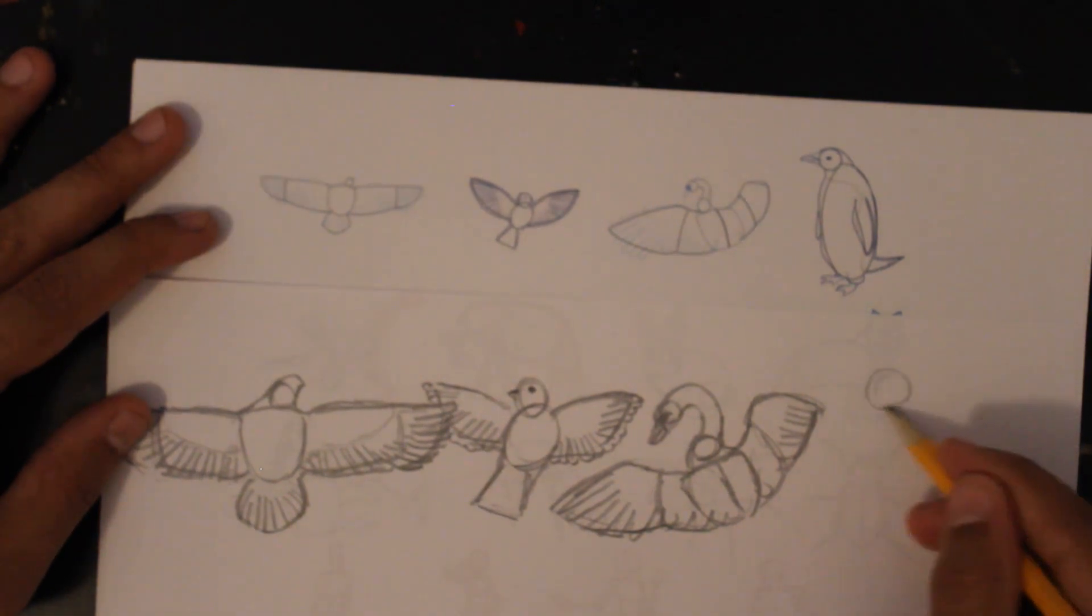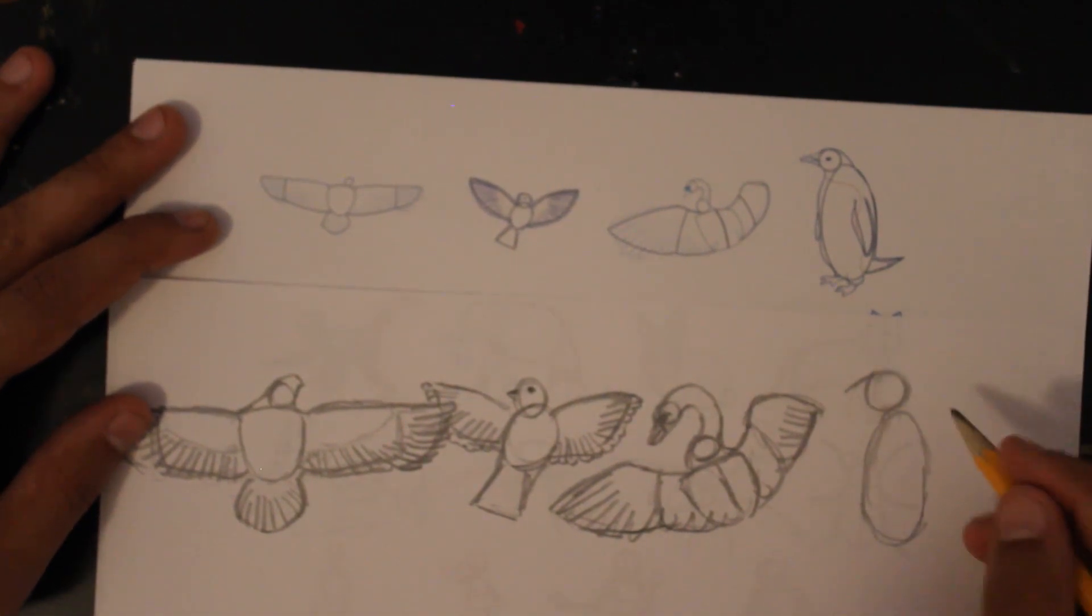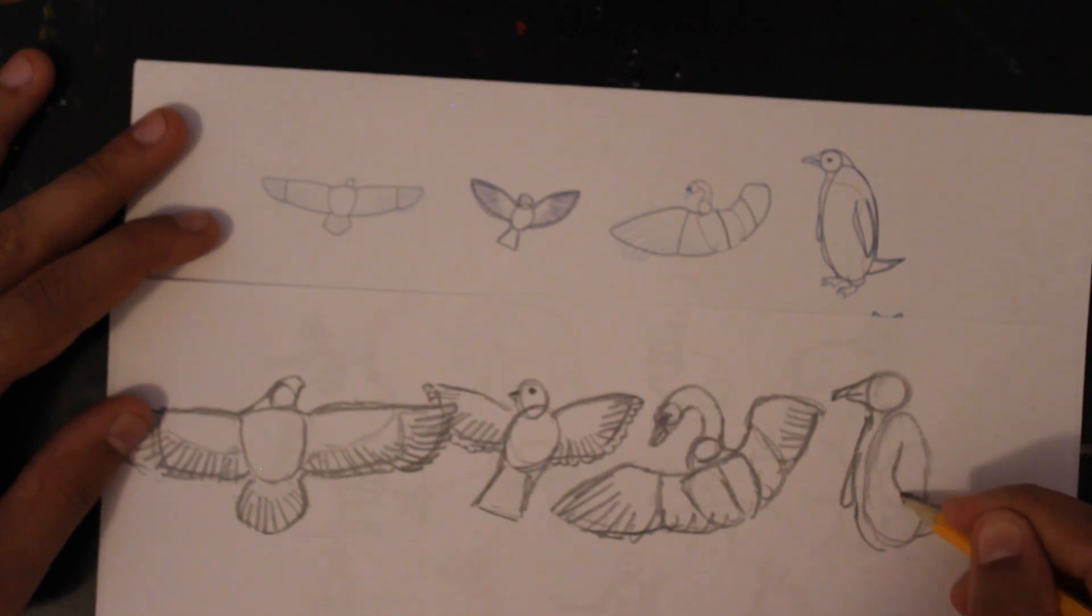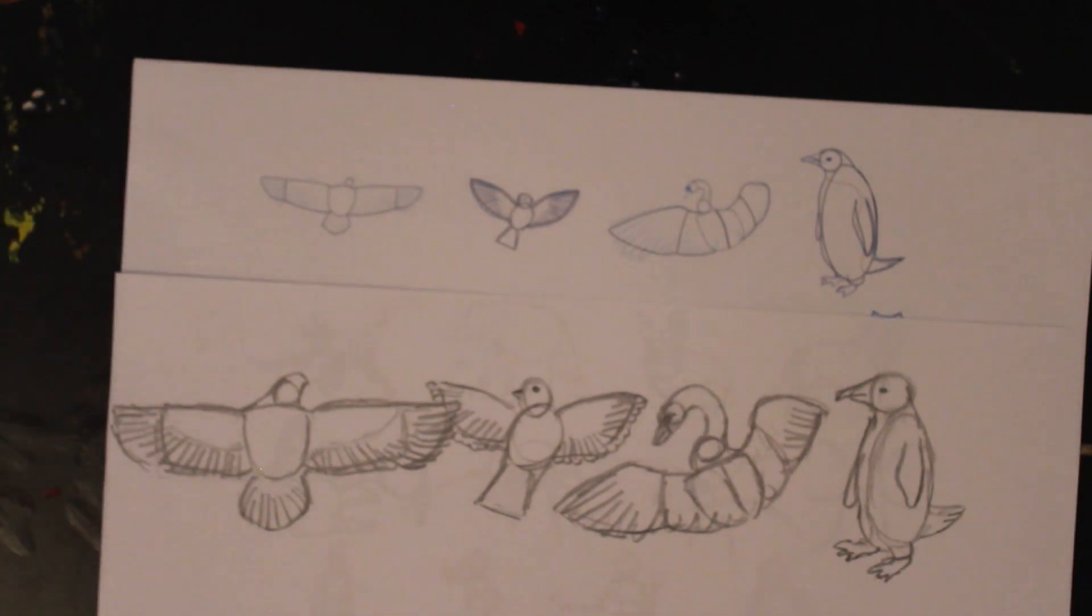And the last of the birds is the penguin. Do the shapes first. The penguin shape is pretty basic. And then add the details around the shapes. Here we go. And that's it for the birds.